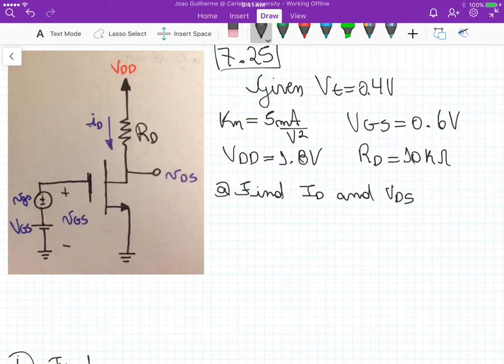This is problem 7.25. We have an amplifying circuit in Chapter 7 using an NMOS transistor. The given information: threshold voltage VT is 0.5 volts, device transconductance is 5 milliamps per square volt, VGS is 0.6 volts, VDD is 1.8 volts, and the drain resistance RD is 10k ohms.